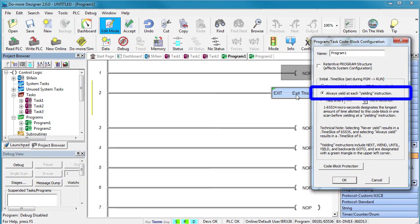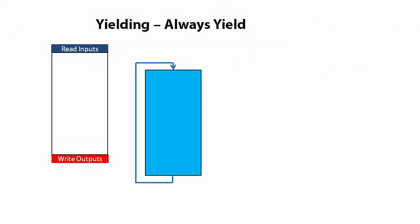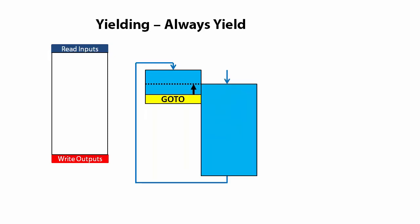Always yield is basically the same thing except it will also yield for a GoTo instruction if the GoTo instruction points to something earlier in the code. Then on the next scan it will start at that previous line and continue to the bottom of the routine assuming it doesn't hit another GoTo again.